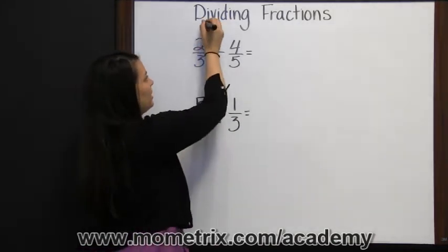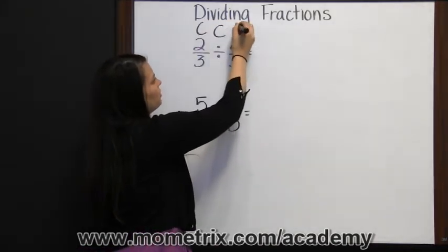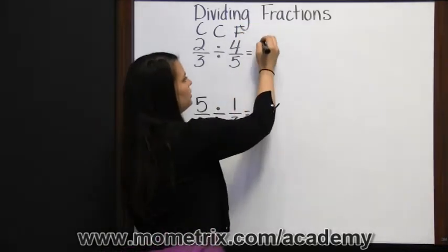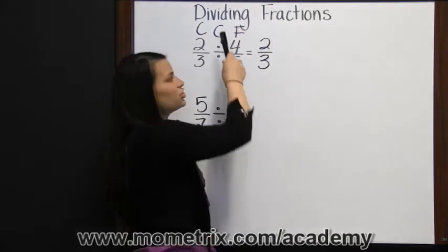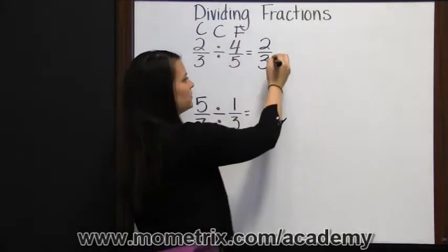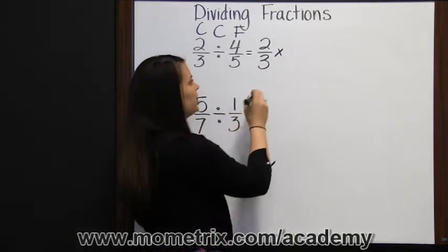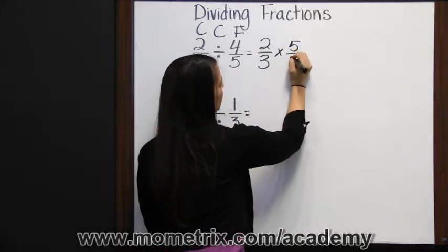Or copy, change, flip. Copy your first fraction, two-thirds. Change division to multiplication, and flip the last fraction to five-fourths.